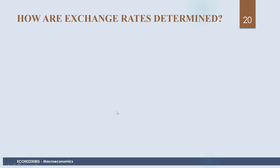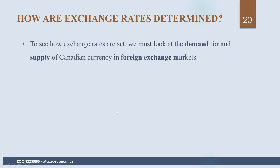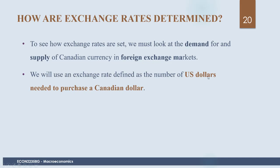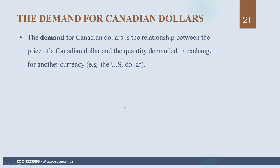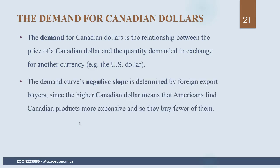Exchange rates are determined in a market through demand and supply. To see how exchange rates are set, we look at the demand for and supply of Canadian currency in foreign exchange markets. We will use an exchange rate defined as the number of US dollars needed to purchase a Canadian dollar. The demand for Canadian dollars is the relationship between the price of a Canadian dollar and the quantity demanded in exchange for another currency, and the demand curve has a negative slope.